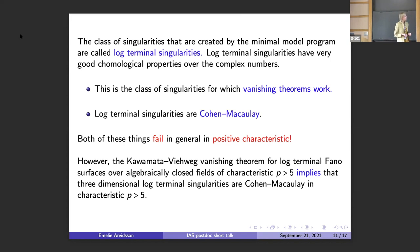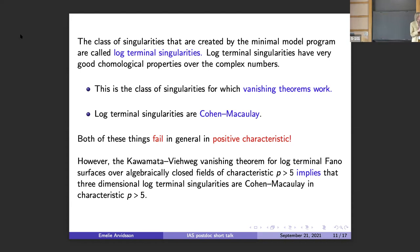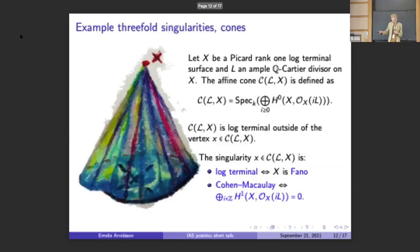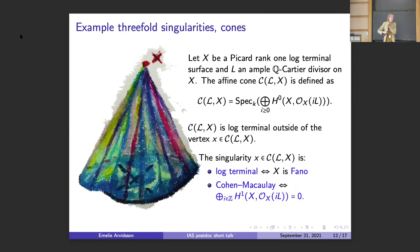Both of these things will fail in general positive characteristic. But what I want to tell you today is that having the Kawamata-Viehweg vanishing theorem for just these Fano surfaces in fact implies that log-terminal threefold singularities are Cohen-Macaulay in characteristic p greater than five. I wanted to explain why this is the case by the following example.